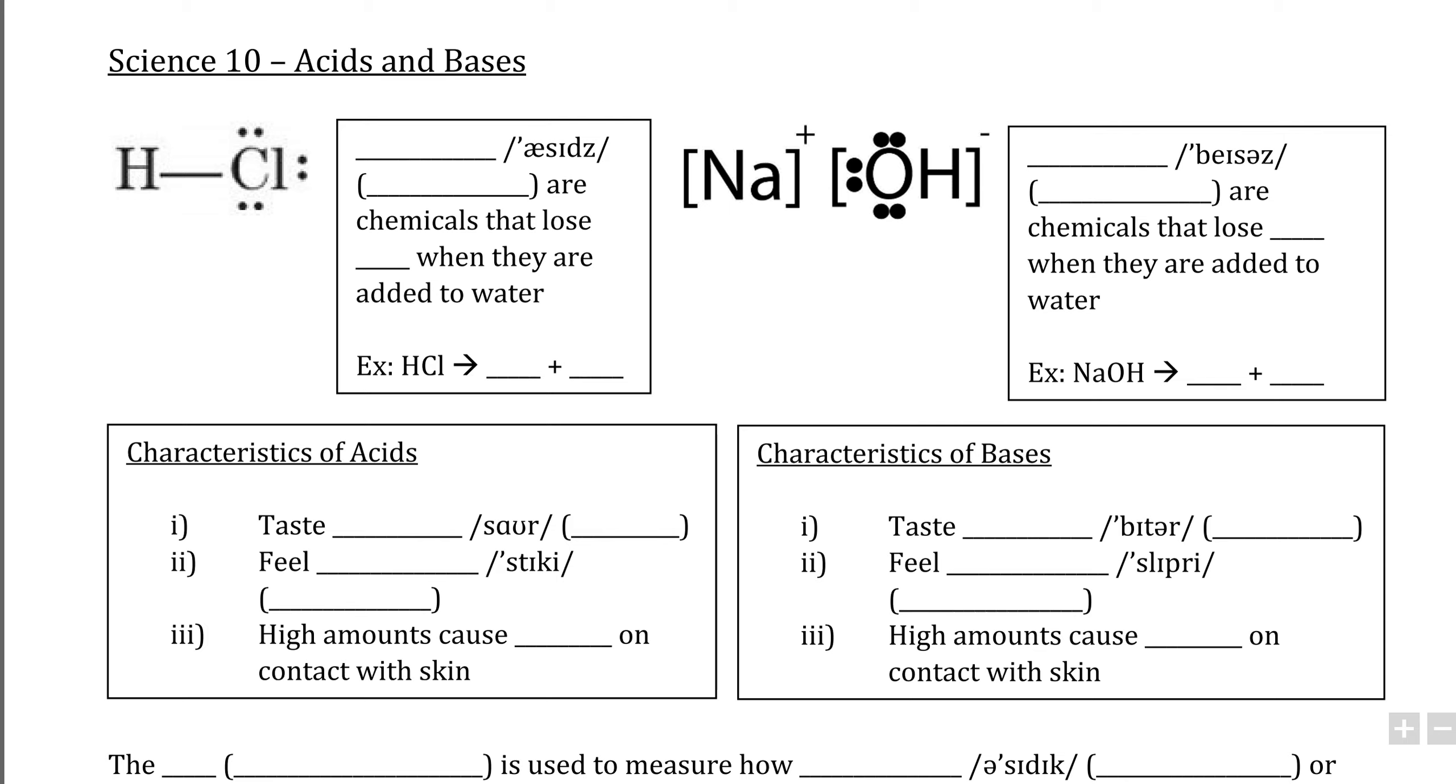In this video, we're going to be learning about two types of compounds that are commonly talked about in chemistry: acids such as HCl and bases such as NaOH.